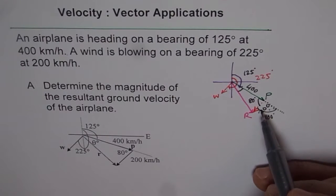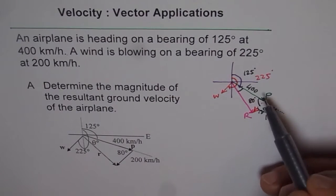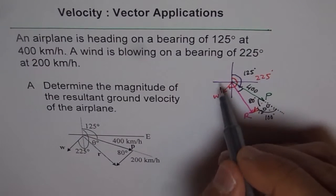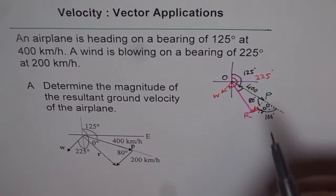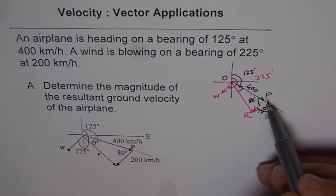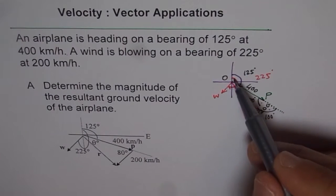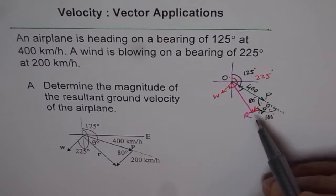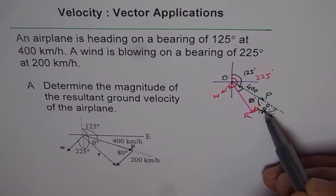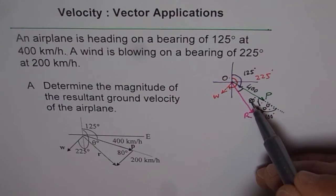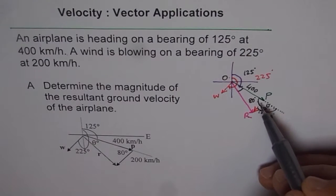And now the solution is: we know two sides of a triangle. So we are calling this, let this be O. So our triangle here is O, P, R. In this triangle we know OP is 400, PR is 200, and the angle in between is 80. So when we know two sides and included angle, we can use which law to solve the triangle? Cosine law.